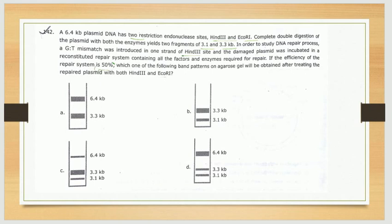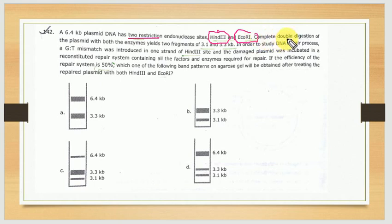The first question is from the CSIR 2014 paper, question number 142. A 6.4 kb plasmid is given which has 2 restriction endonuclease sites: HIN3 and ECO-R1. Complete double digestion of the plasmid with both enzymes yields two fragments of 3.3 kb and 3.1 kb.